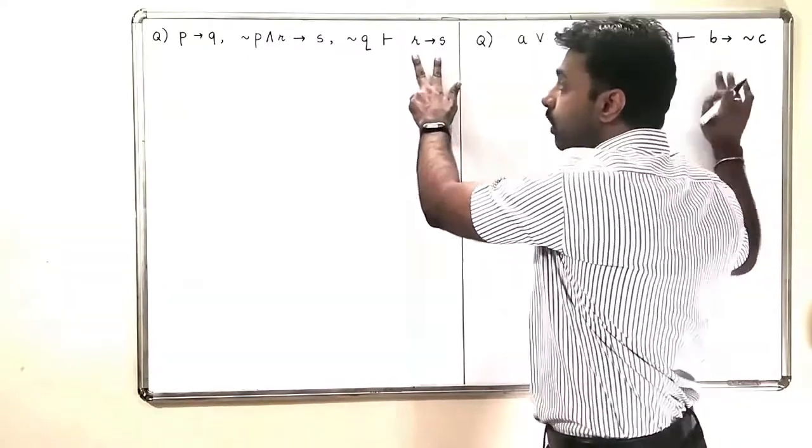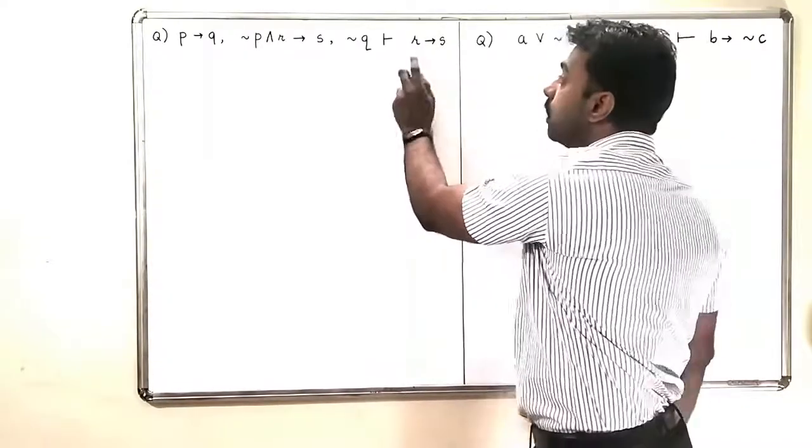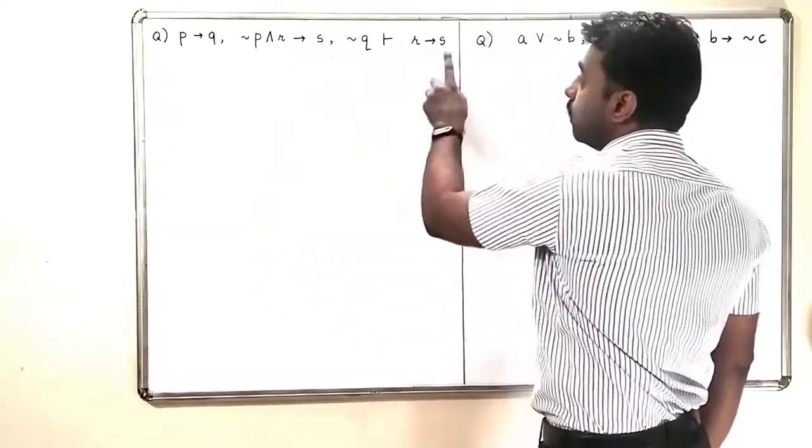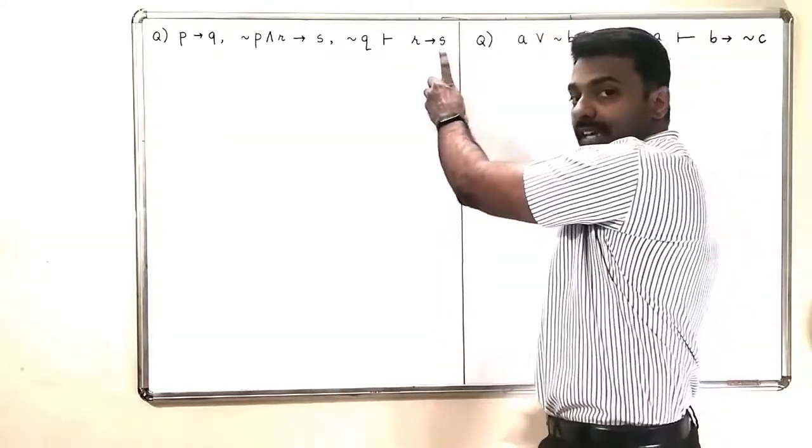So, in this case, when you have a conclusion as an implication, you have to consider R and then you have to simplify the argument and you have to try to reach S.